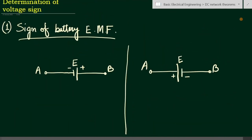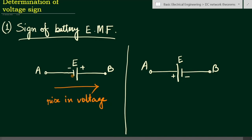Let us see about the sign of battery EMF. Whenever we have an EMF or voltage source, what will be the sign? If we go from left to right, we have a negative potential on the left-hand side and a positive potential on the right-hand side. That means point B is at higher potential and A is at lower potential. In this left-to-right direction there is a rise in voltage, so the EMF value will have a positive value.